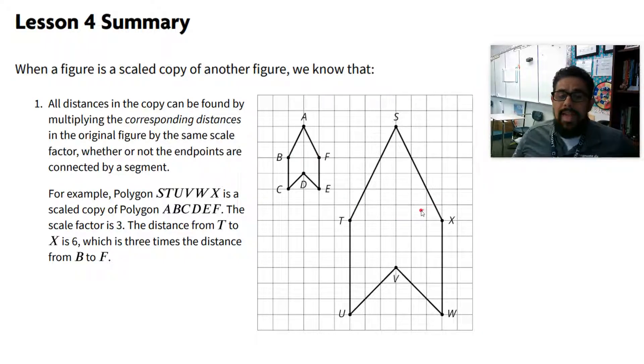This will work with any of the sides that you measure, even sides that are not on the figure. So BC is on the figure. BC is two, scale factor three. When I check the corresponding side, TU, it's three times two, which is six. If I look here at this line segment, it's not really on the figure, but it's in there. This is one. When I look here at the copy, it's three times bigger, which is three. So all the sides are multiplied by three.